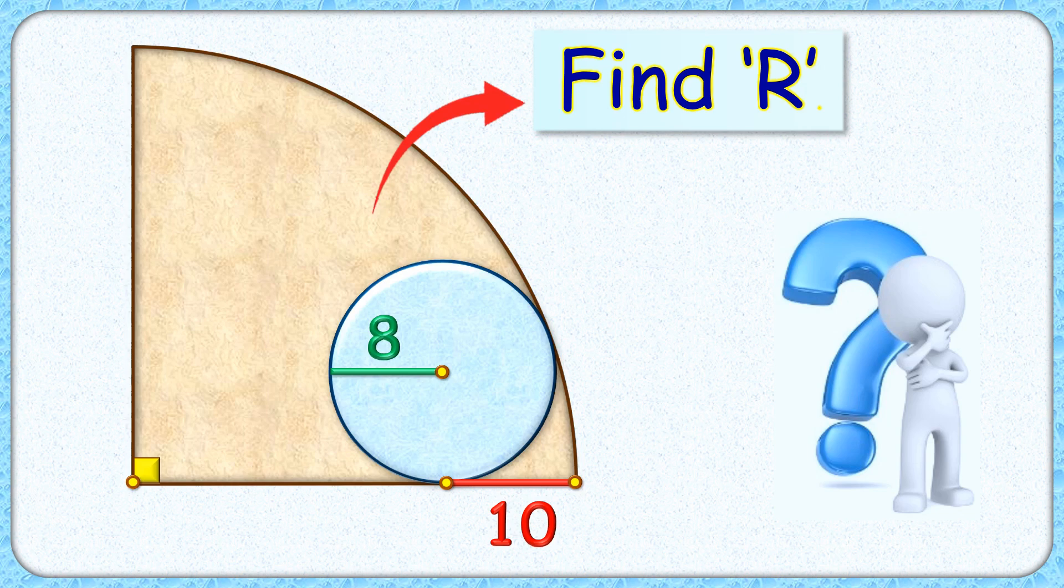Welcome everyone. This interesting question: we have a circle with radius 8 centimeters inside a quadrant. The length of this red line segment is given as 10 centimeters. The exciting part is, with this limited data, we have to find the radius of this quadrant.